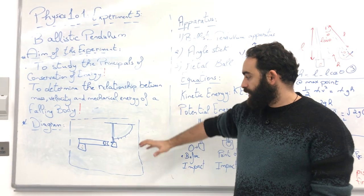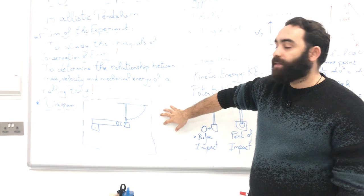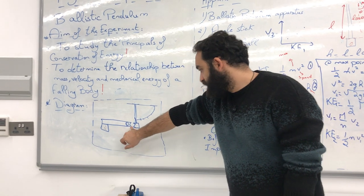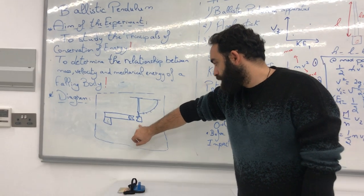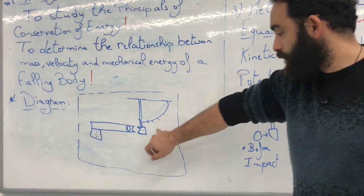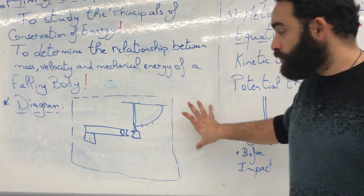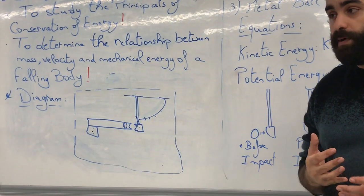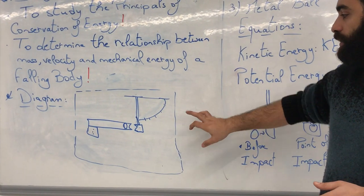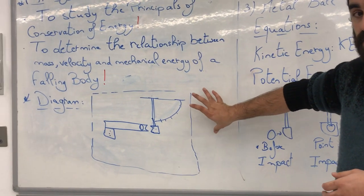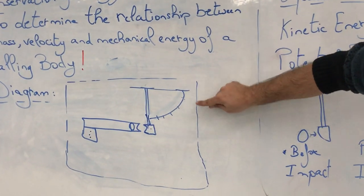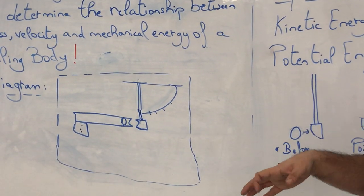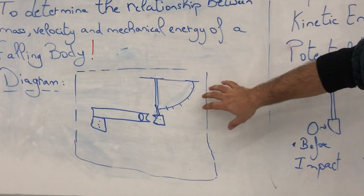Then we go to the diagram. The diagram of the experiment shows the ballistic pendulum: the ball will be fired from here to the pendulum, the pendulum will go to its maximum angle and then go back. You should also have this specific diagram. I don't want any diagrams from Google or from somewhere else. You either take a screenshot of this one, or draw it by hand and take a picture and post it to the report. For online students, please draw it by hand and post it.